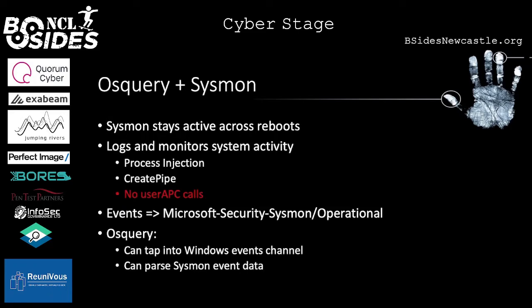The last example I want to show is OSQuery combined with Sysmon, which can be quite powerful. Sysmon allows you to monitor your Windows devices for certain events based on configuration you define yourself. It stays active across reboots and monitors system activity — some examples of what it monitors are process injection and create pipe. However, I found that it doesn't monitor user APC calls. Process injection can be done via CreateRemoteThread, which Sysmon can detect, but with user APC calls you can attach yourself to an already existing thread of a process without creating a new thread, which allows you to fly under the radar and not be detected by Sysmon.